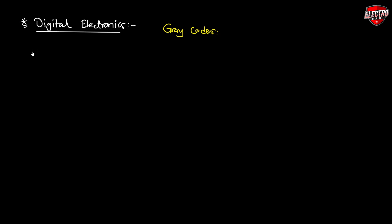Gray codes are also known as non-weighted codes, because there is no positional weightage with each bit in the given data.